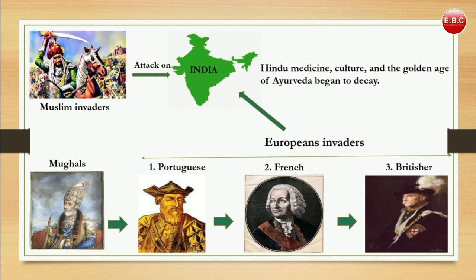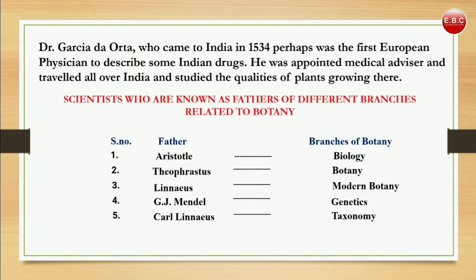After the Mughals, European invaders came — first the Portuguese, followed by the French, and lastly the British. Dr. Garcia de Orta, who first came to India in 1534, was perhaps the first European physician to describe some Indian drugs. He was appointed as a medical advisor and traveled all over India, studying the qualities of plants growing there.